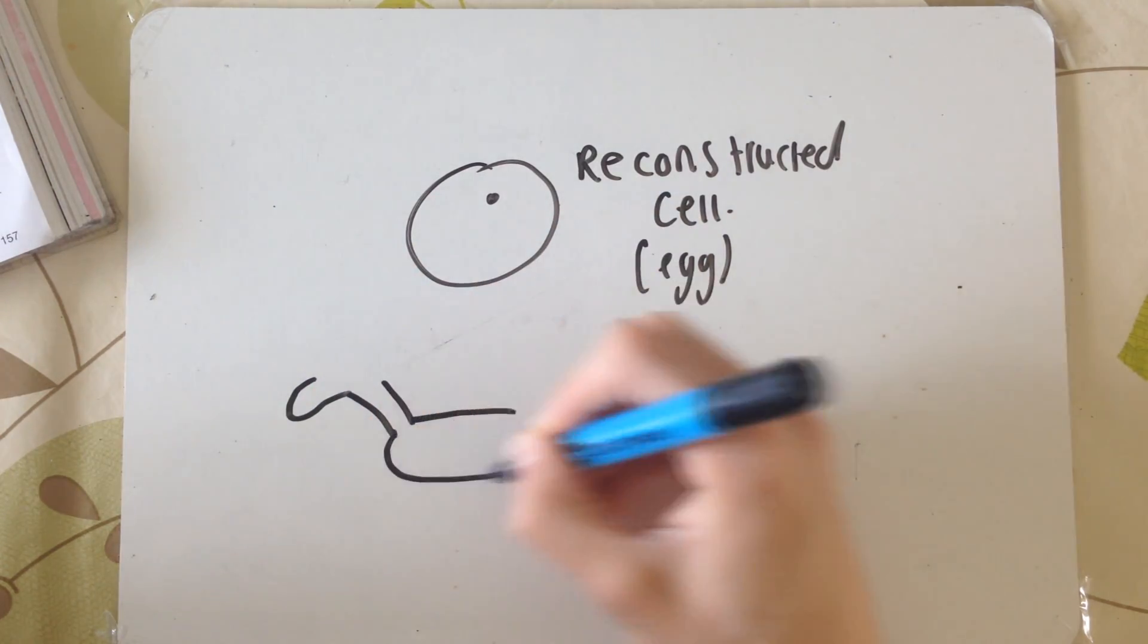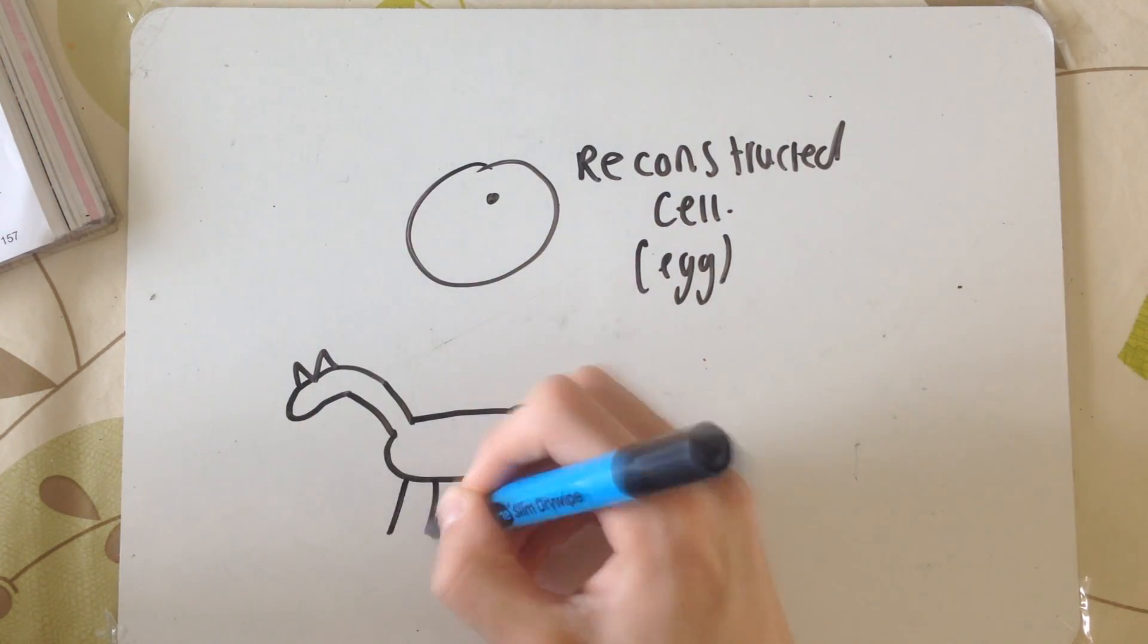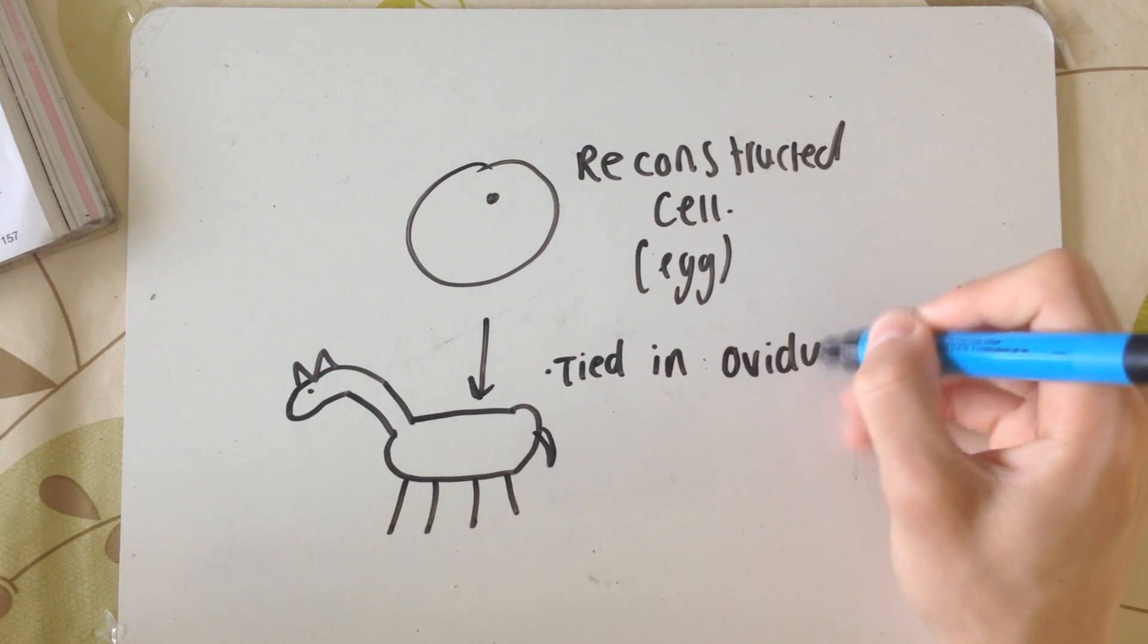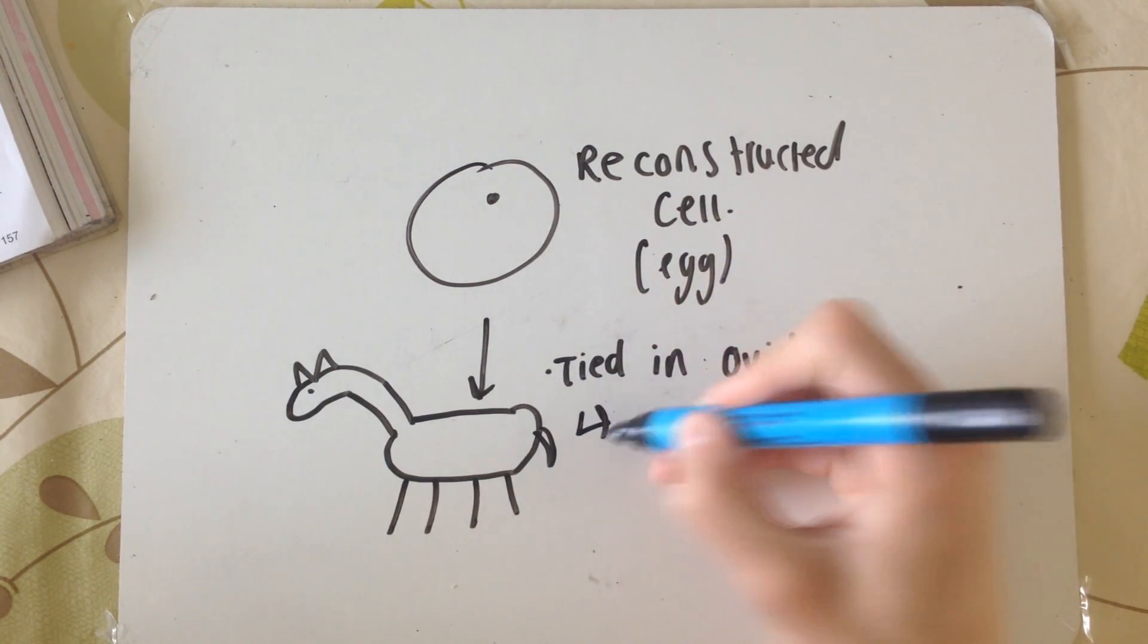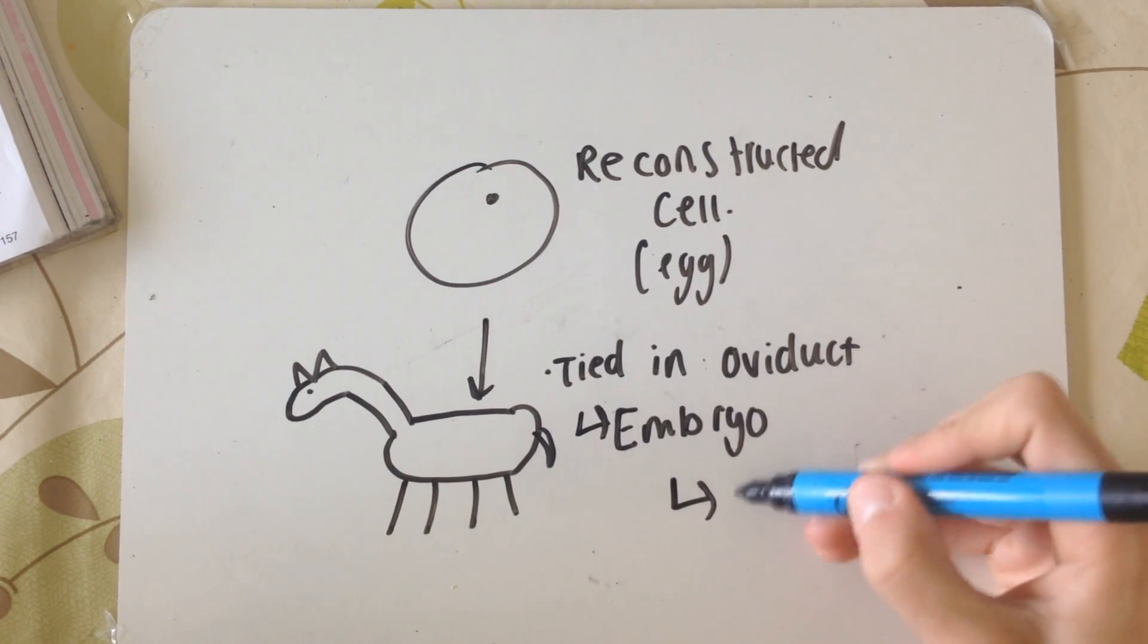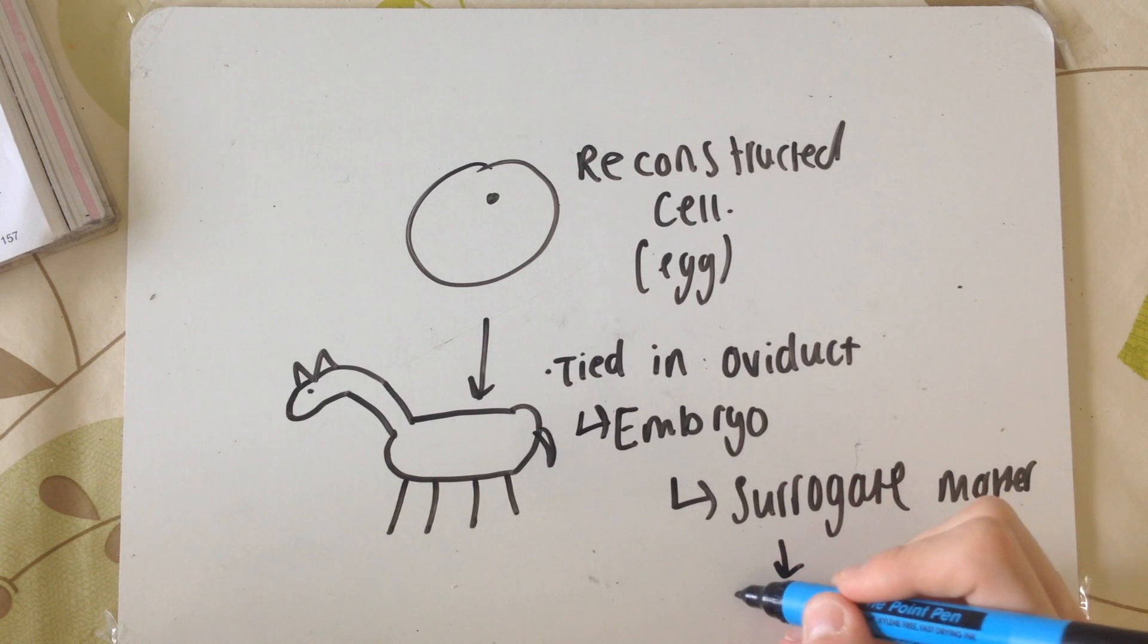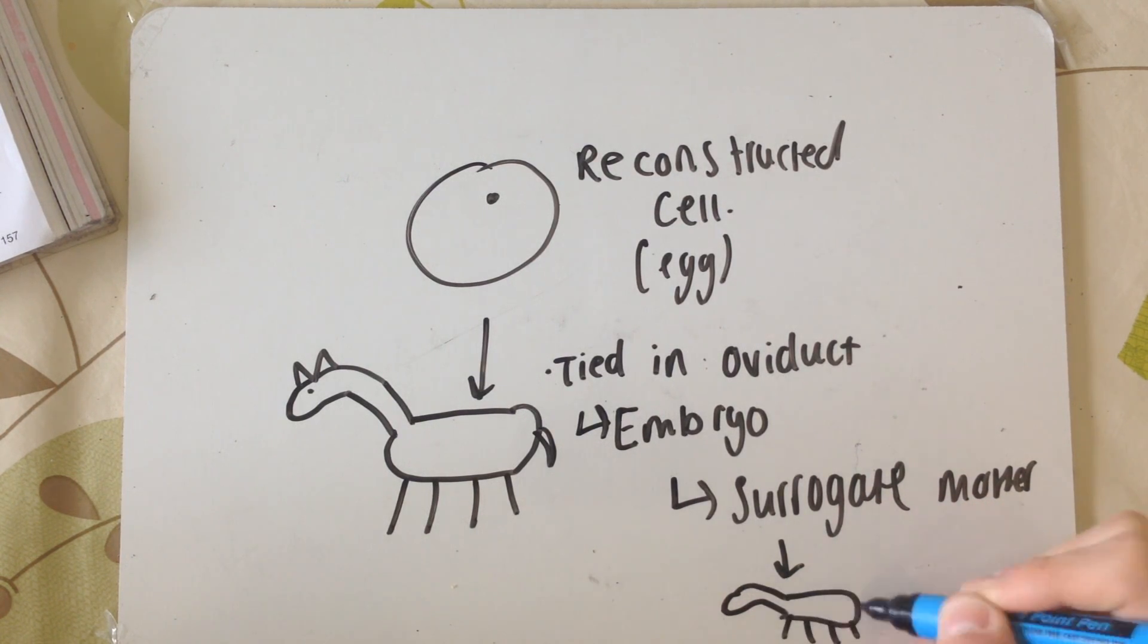This newly reconstructed egg cell is then placed into another horse in the oviduct. After this, the early embryo is quickly recovered and inserted into a surrogate mother which will give birth to the genetically identical horse of the original horse.